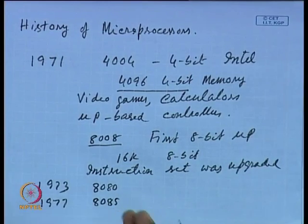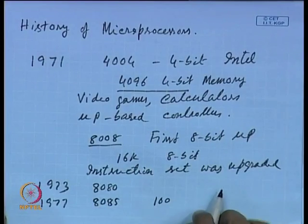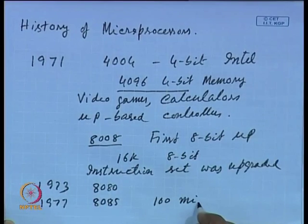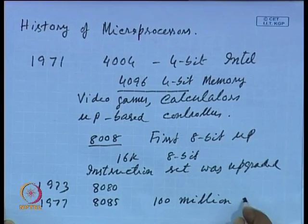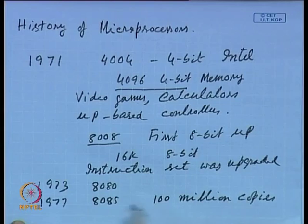The 8085 is an 8-bit processor with a rich instruction set, and 100 million copies were sold by Intel itself. Not only Intel was manufacturing it — many other companies like Toshiba, AMD, NEC, and Hitachi got licenses and manufactured the same chip.